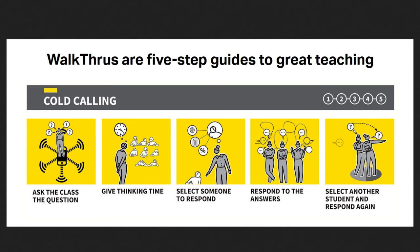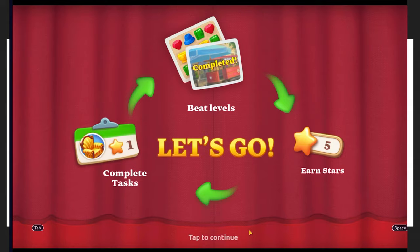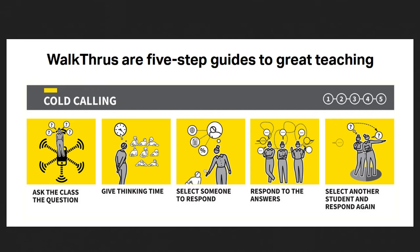Cold calling is an example of behaviorism. Look at how simplistic the tasks are and how they relate to that image from Manor Matters. You ask the class a question, you give thinking time, you select someone at random, they respond, and then you select other students. I'm so glad there's a five-step process for cold calling. But it's a repetitious form of operant conditioning, and that's intentional — they believe in operant conditioning.